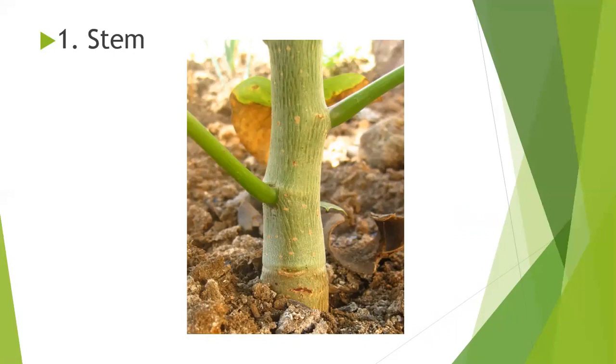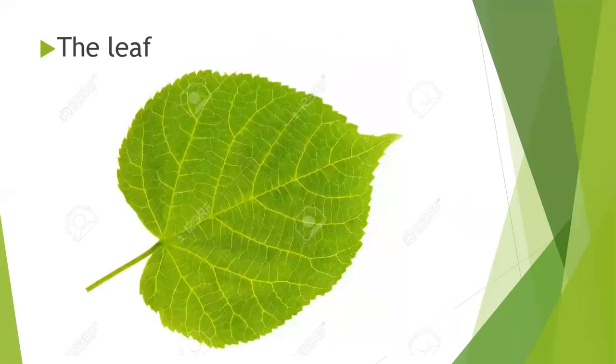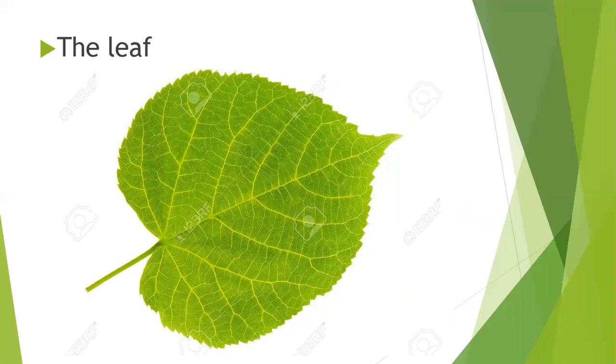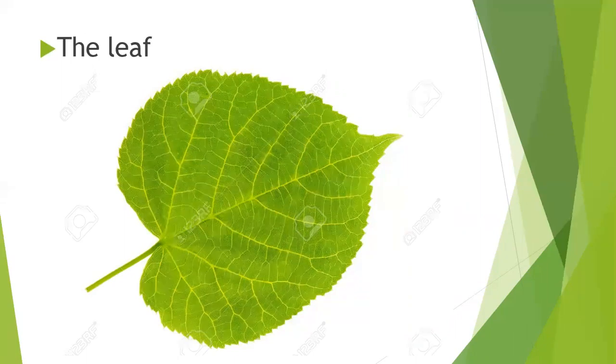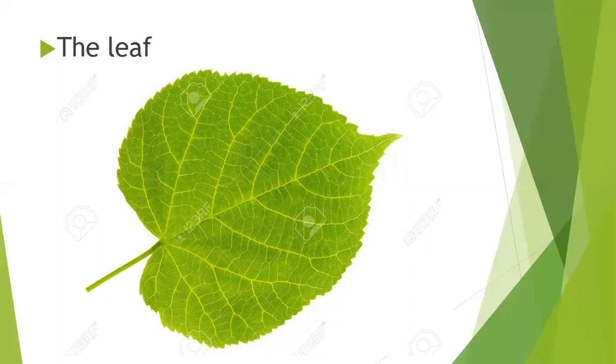Next part of the plant is leaf. The leaf is a flat and green part of a plant. It is developed from the stem and branches. They are usually green due to the presence of chlorophyll which helps them to prepare their own food. So leaves are also called the food factory of a plant. And leaves also help the plant to breathe.